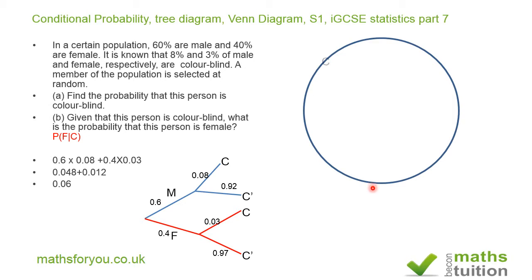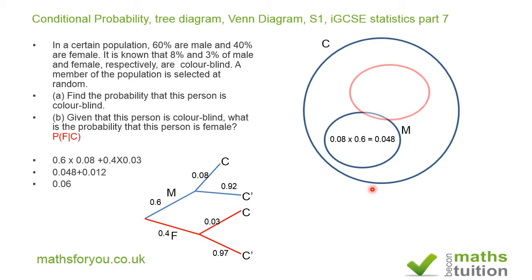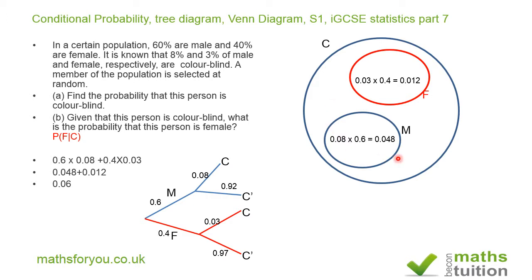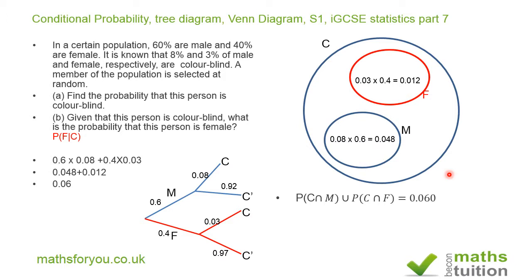In this colorblind sample space, we have men who are colorblind with probability 0.048, and the probability of being female and colorblind is 0.4 times 0.03, which gives 0.012. The total probability of being colorblind in this sample space is 0.060. So the probability of being female given that you're colorblind is 0.012 divided by 0.060, which equals one fifth, or 0.2.